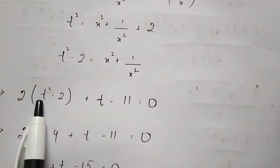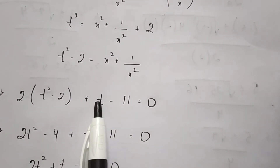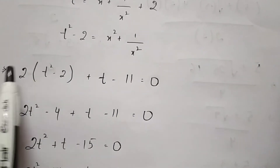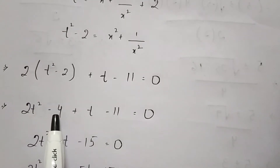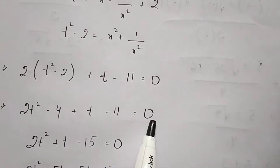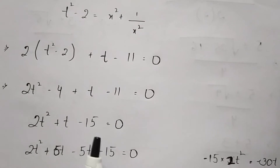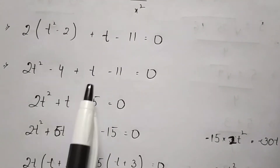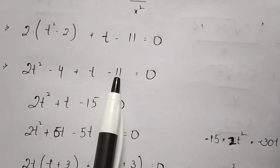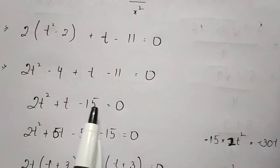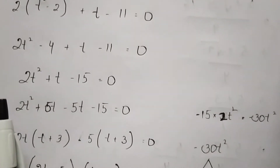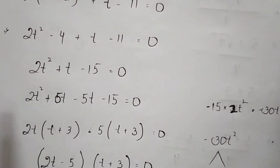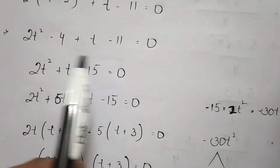We get 2(t² - 2) + t - 11 = 0. When we multiply 2 through, we get 2t² - 4 + t - 11 = 0, so 2t² + t - 15 = 0. We need to solve this quadratic equation.